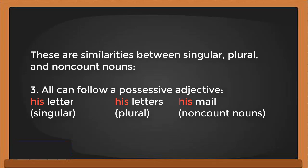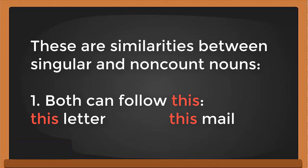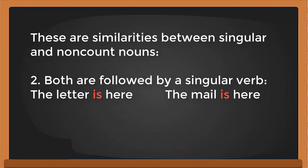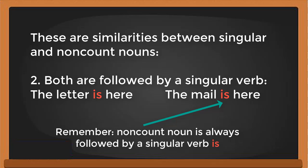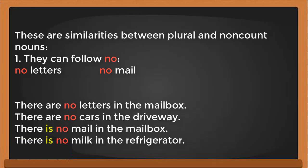Now let's look at the similarities between singular and non-count nouns. They can both follow 'this'. For example: 'this letter' and 'this mail'. They are also both followed by a singular verb. Singular nouns and non-count nouns must be followed by a singular verb — 'is'. For example: 'the letter is' and 'the mail is'. Always remember that non-count nouns are followed by a singular verb.